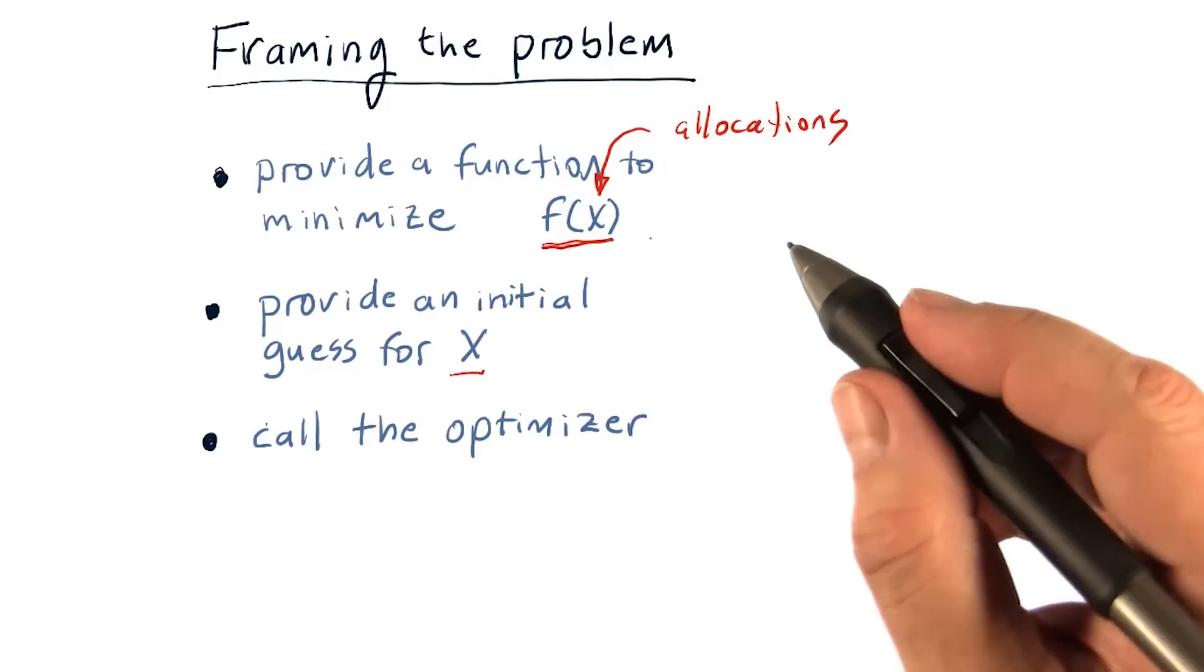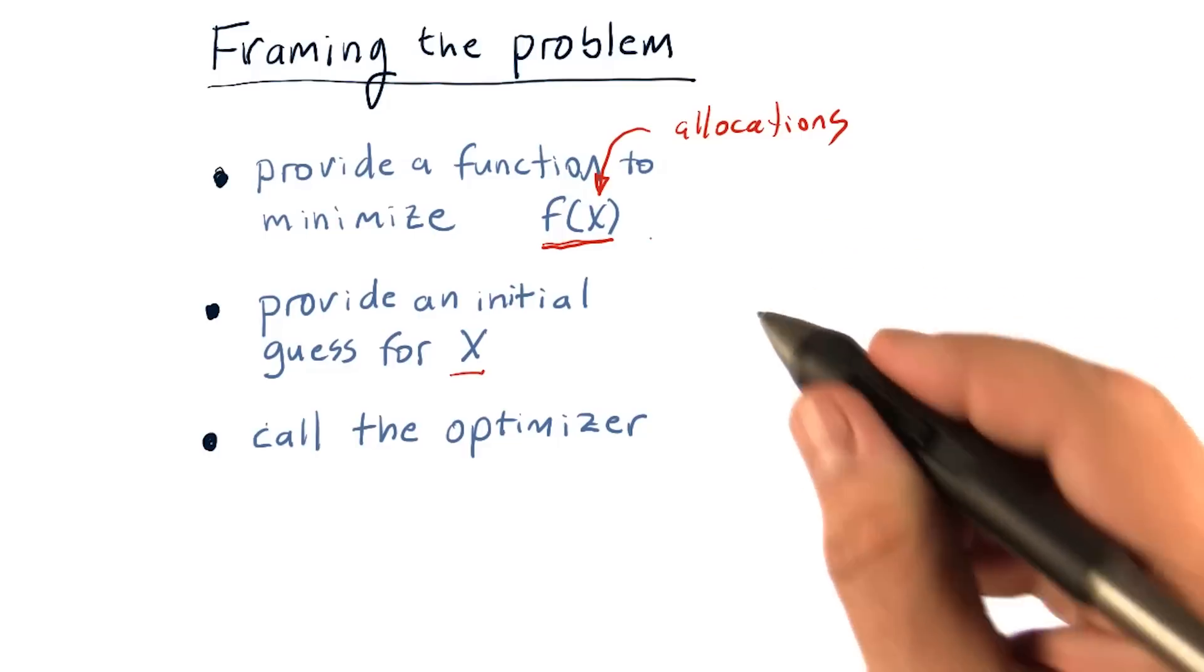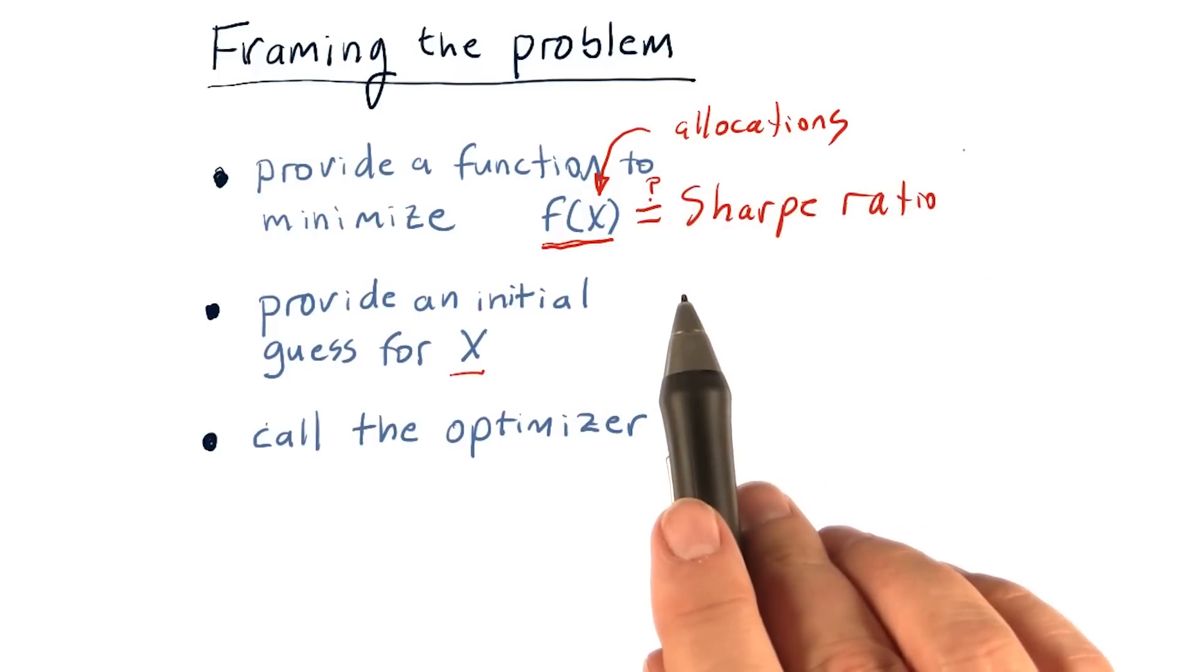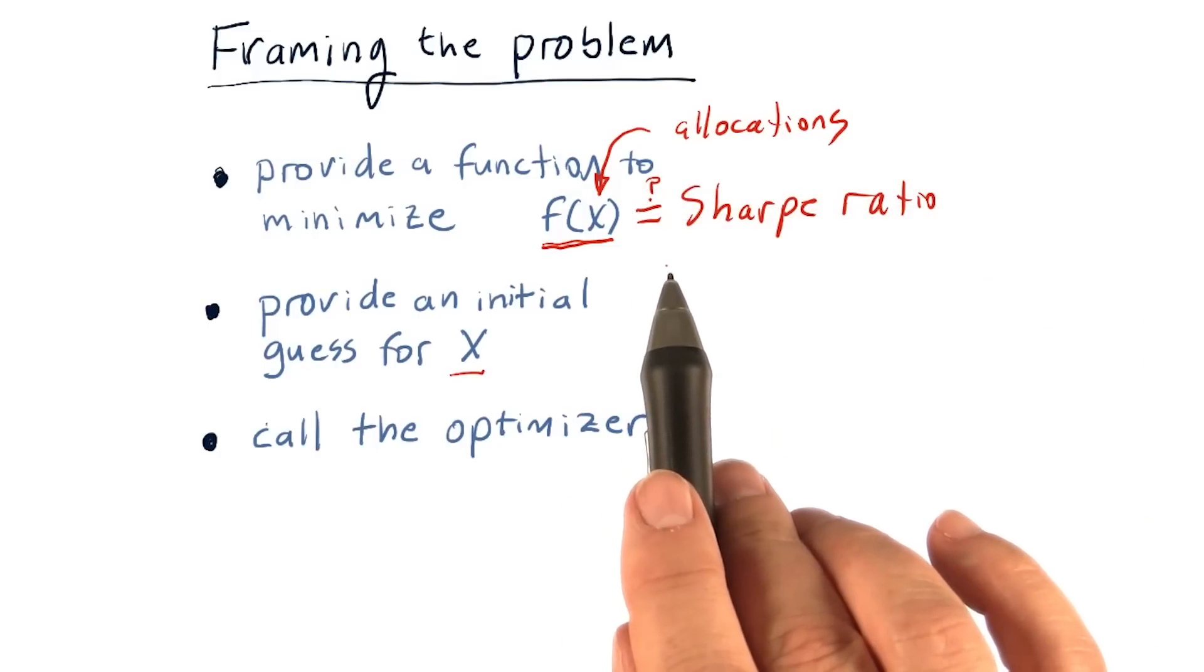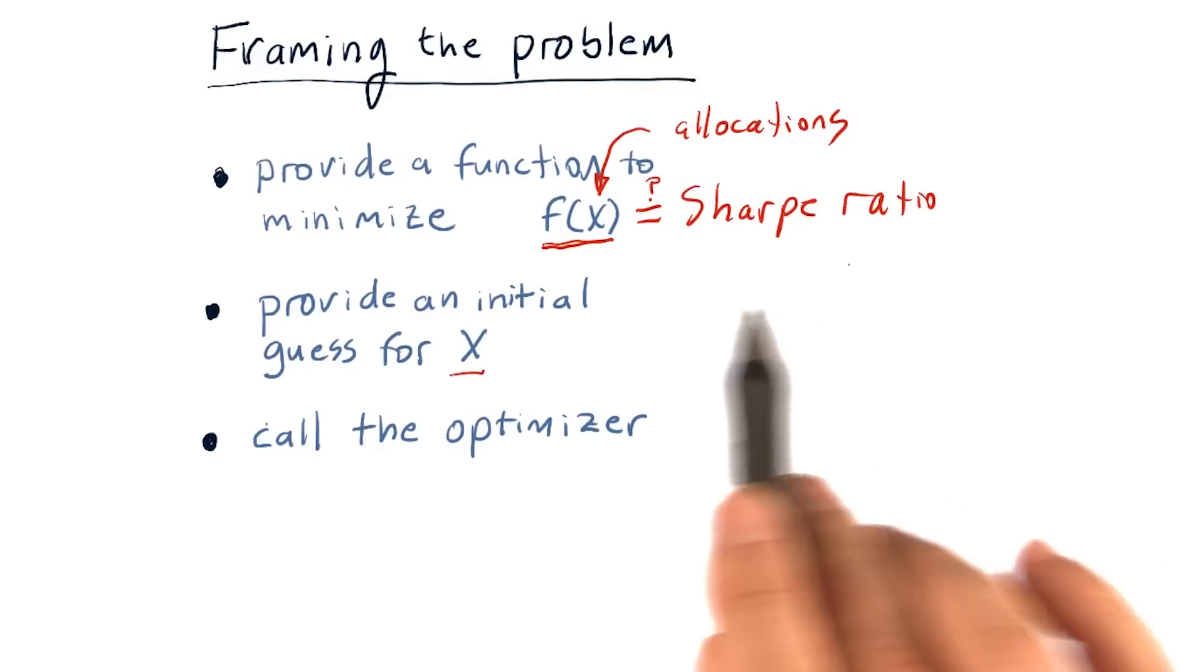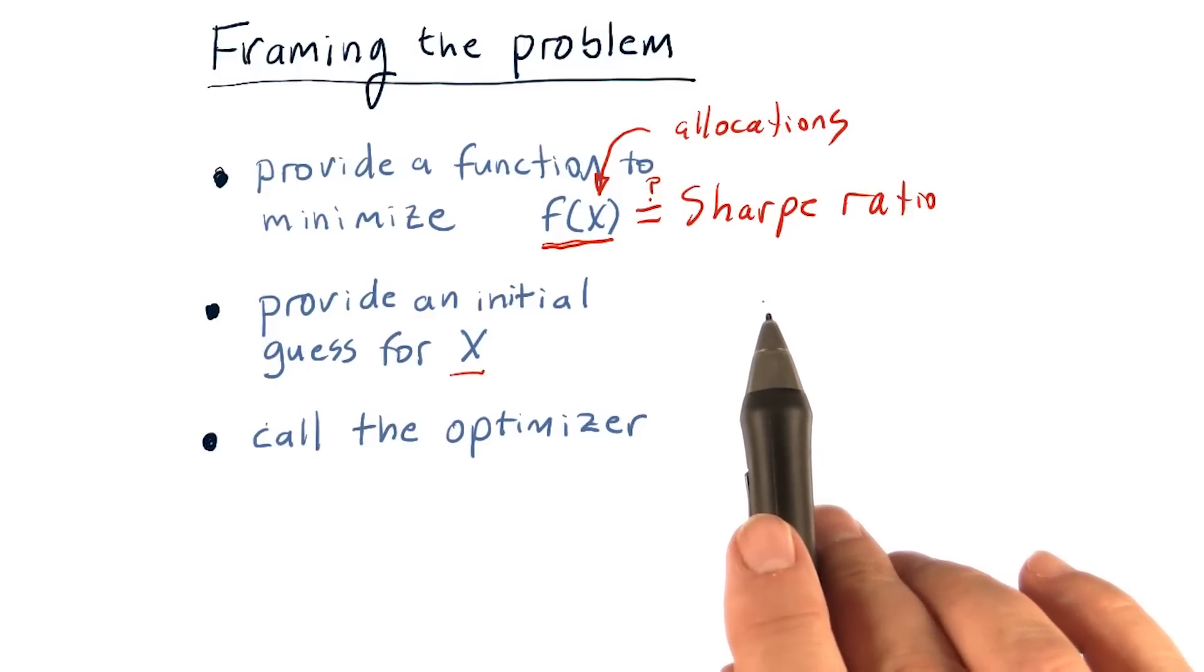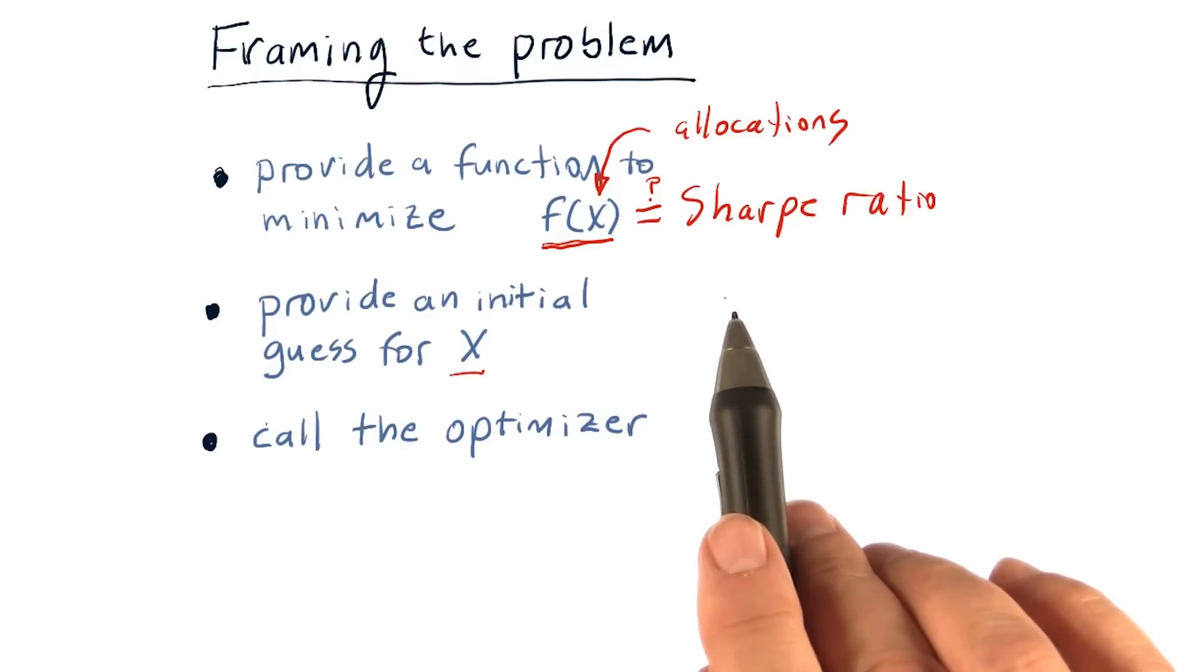We said just a moment ago that we want to optimize for Sharpe ratio. So, is this just Sharpe ratio? Well, not exactly, because what the minimizer will do in this case is try to find the smallest Sharpe ratio. So it'll find allocations that minimize that. And we want, of course, the largest Sharpe ratio, because larger Sharpe ratios are better.